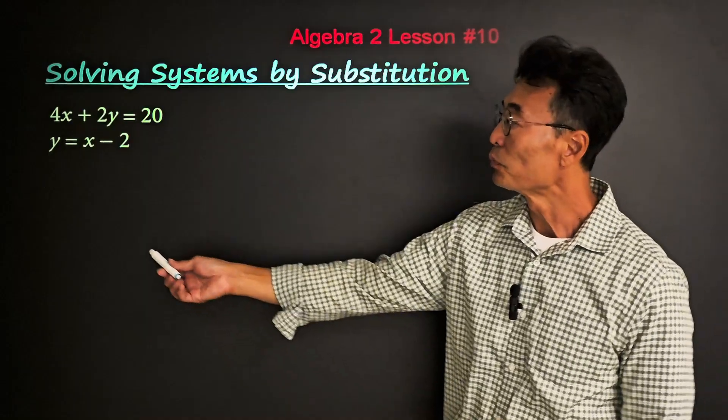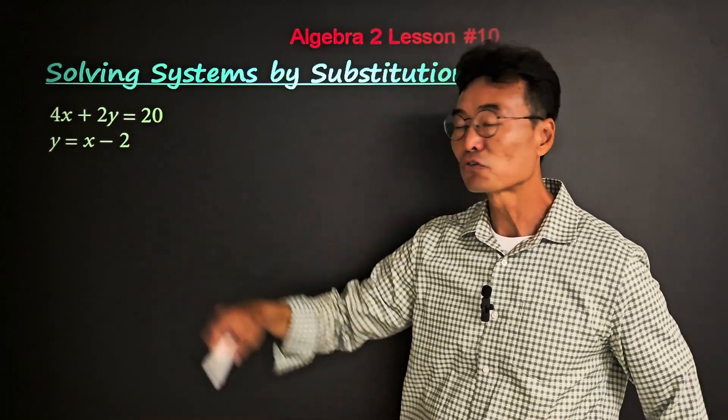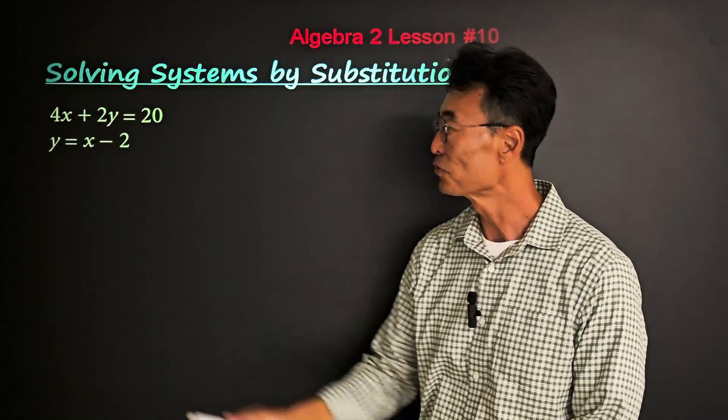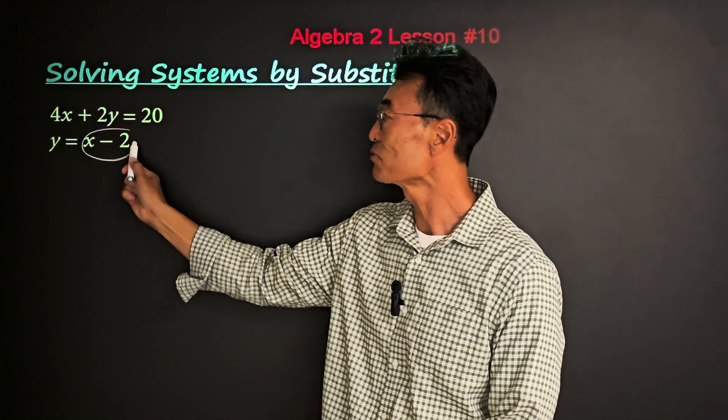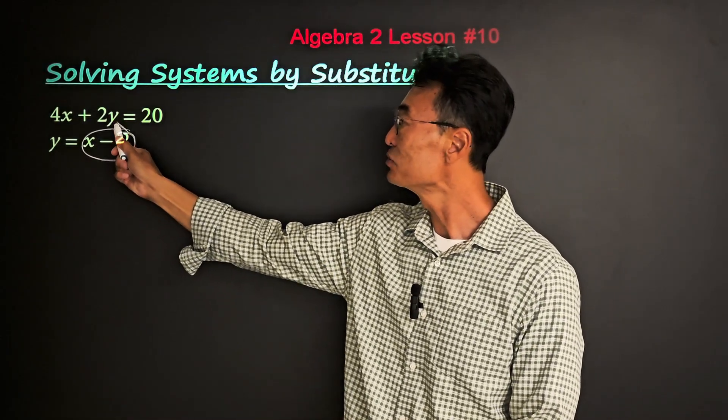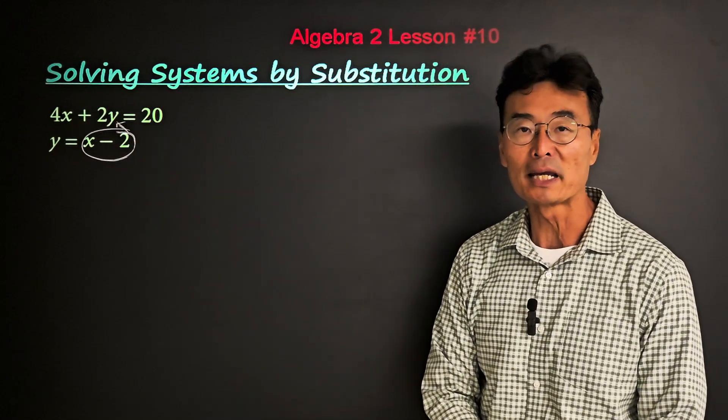First example: we have 4x plus 2y equals 20, and we also have y equals x minus 2. So we'll go ahead and simply take that x minus 2 which equals y and then substitute it into the first equation where the y is.